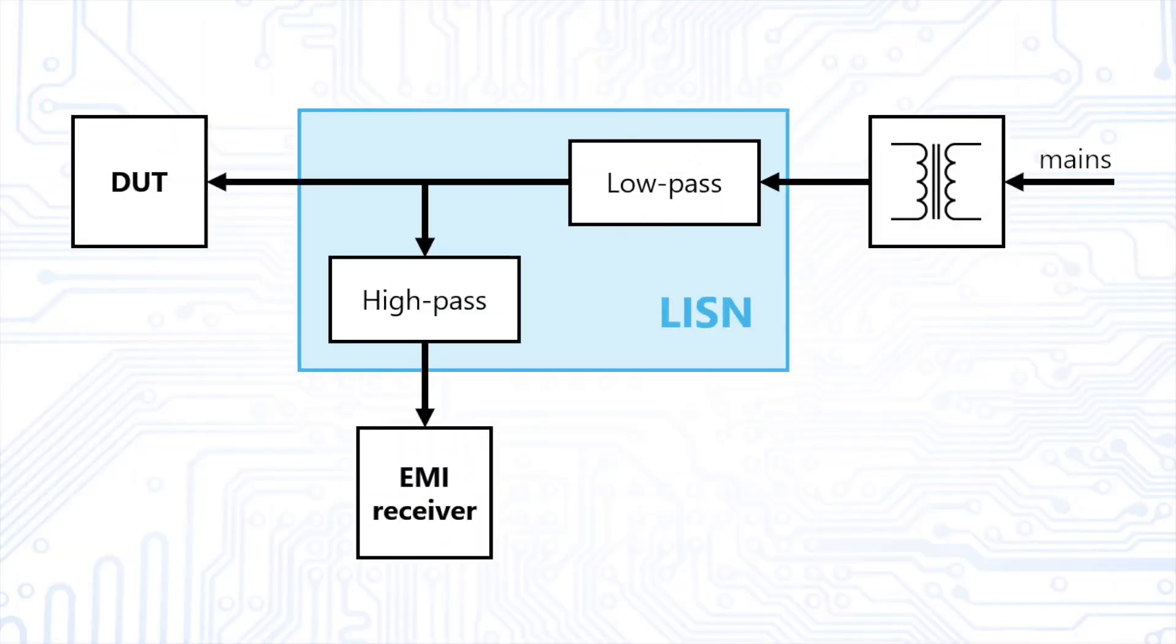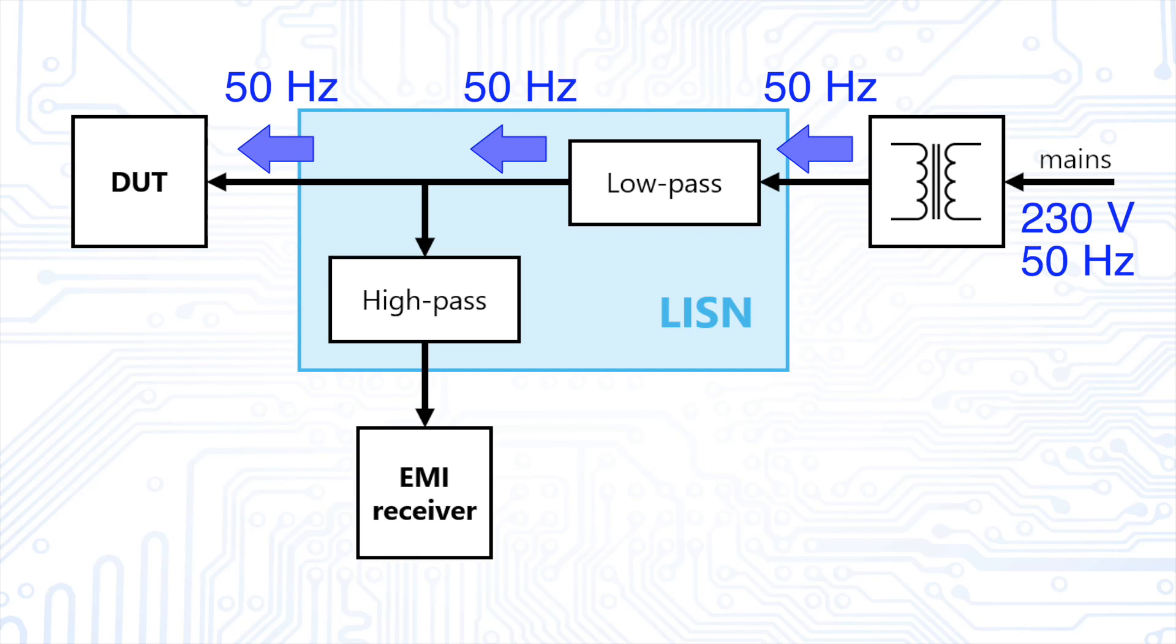This block diagram describes the measurement setup. The 230 volts from the transformer pass through the low-pass filter of the LISEN and reaches the DUT. The DUT itself now causes conducted emissions, which are decoupled via the high-pass filter of the LISEN. These emissions are then measured with an EMI receiver.